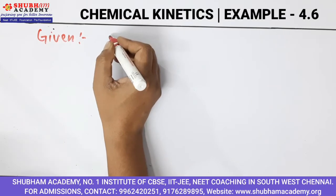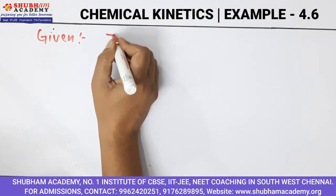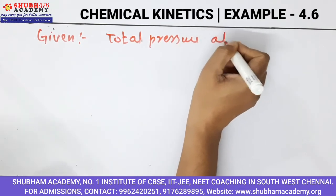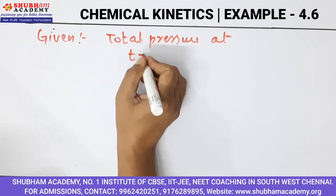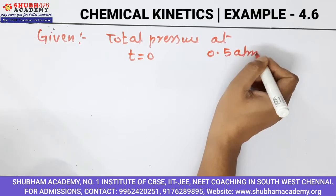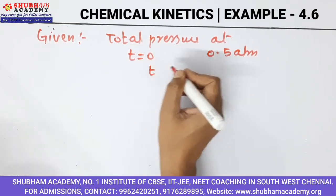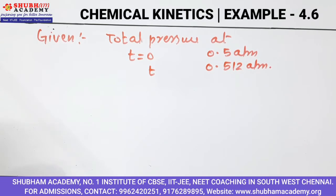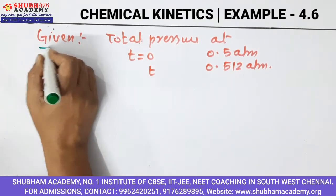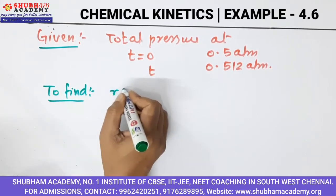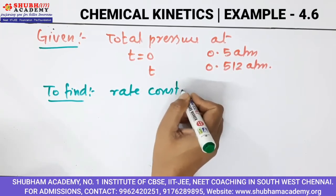As you can see in the question, what is given? Total pressure at time t equals 0 is 0.5 atmosphere, and at time t it is 0.512 atmosphere. What we need to find here is the rate constant k.